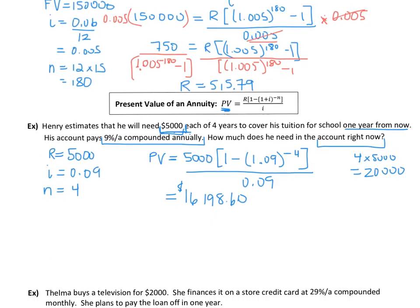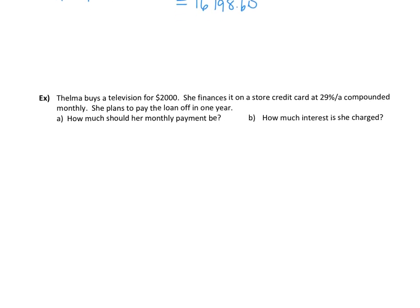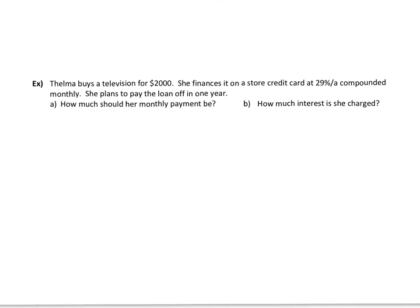Alright, let's continue on here. Thelma buys a television for $2,000. She finances it on a store credit card at 29% per annum compounded monthly. She plans to pay the loan off in one year. How much should her monthly payment be? So we're trying to figure out the R amount. What should her regular payment be?